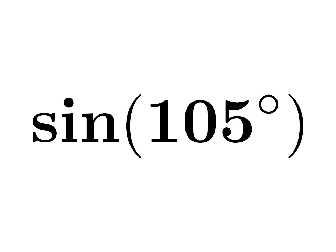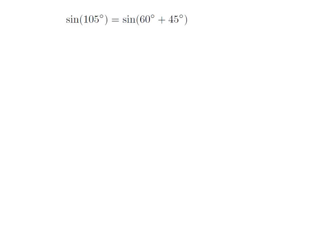In this video, we are going to find the value of sine of 105 degrees. 105 degrees is equal to 60 degrees plus 45 degrees. So, sine of 105 degrees is equal to sine of 60 degrees plus 45 degrees.